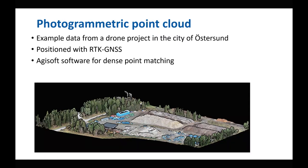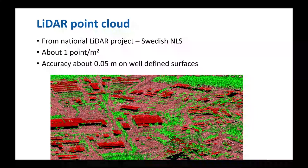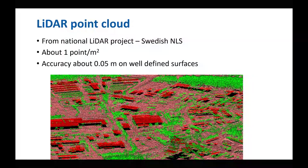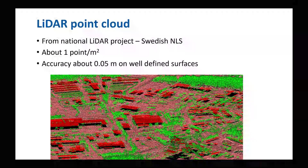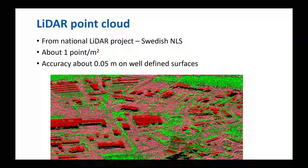The photometric point cloud I'm going to use is an example dataset from a drone project in the city of Östersund, which is in the north of Sweden. The drone was positioned with RTK GNSS and the Agisoft software was used to produce the photometric dense point cloud. The LiDAR points used come from the National LiDAR project in Sweden. It has about one point per square meter and the accuracy is about five centimeters on well-defined surfaces. This data is also free to download at the Swedish National Land Survey's homepage. It's an ongoing project and about one-third of Sweden is covered at the moment.